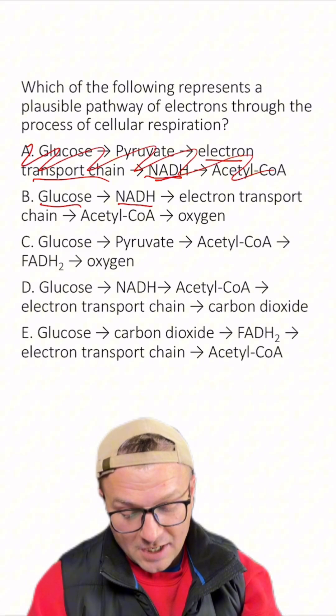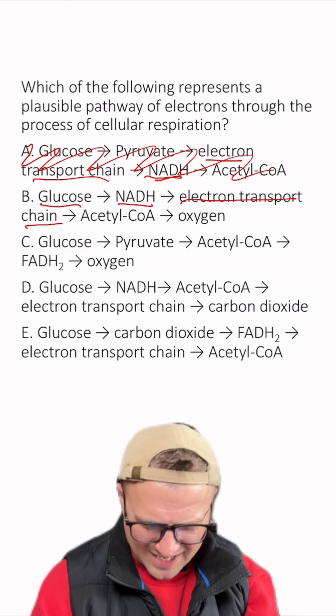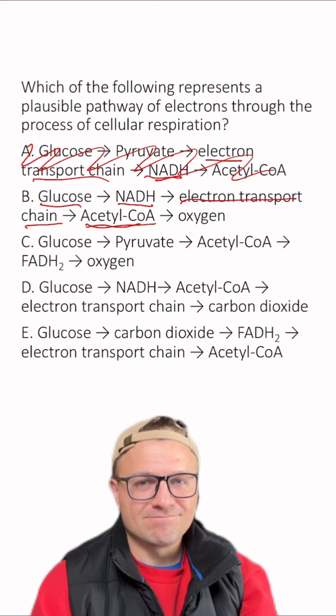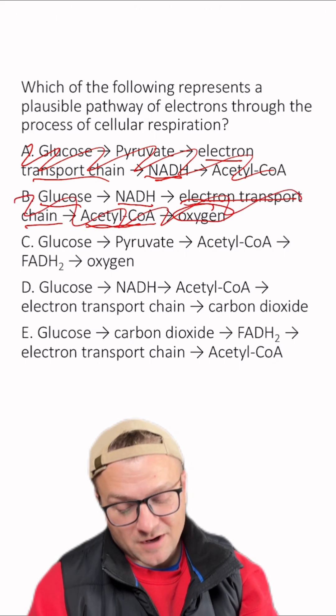B. Glucose, NADH, that sounds kind of right. Electron transport chain, yes. Acetyl-CoA, no. So B is wrong, even though oxygen here is the final electron acceptor.